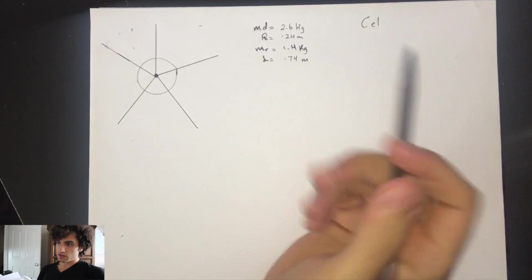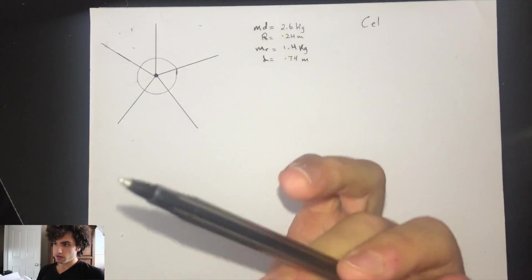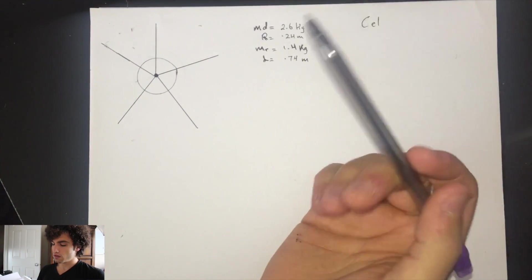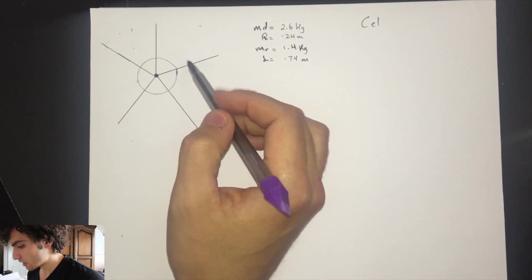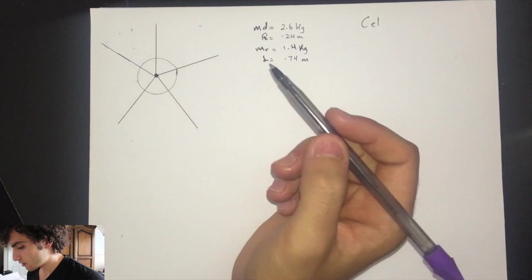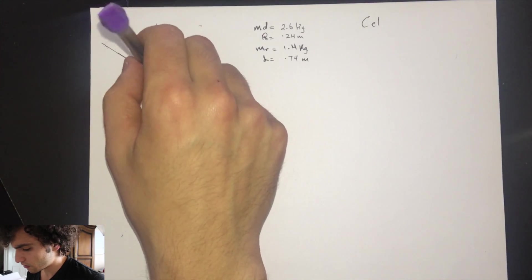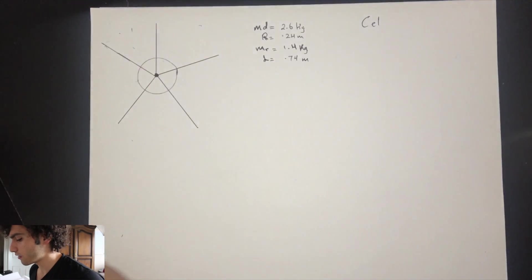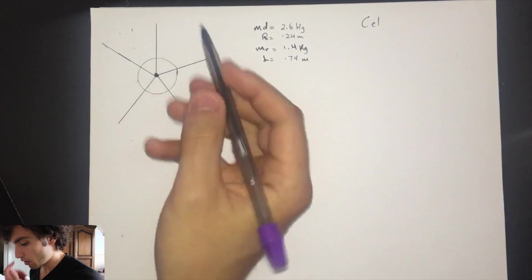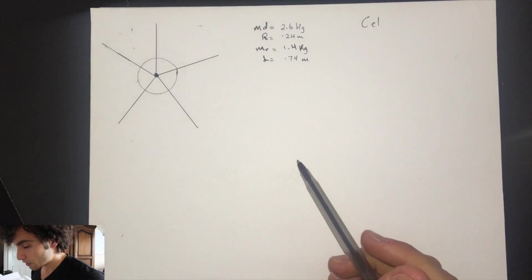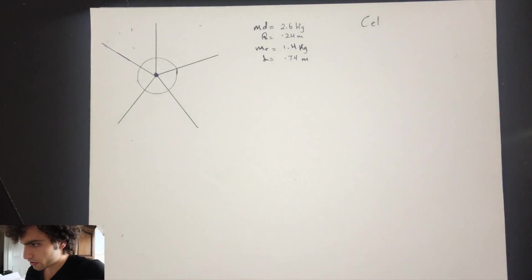Alright guys, this problem is from what they call 'Flip It Physics.' We're going to be doing the ceiling fan problem. We have five rods and there's a disc in here, with a string hanging out from the center of motion, and it's rotating. The first question asks for the moment of inertia of each rod about the axis of rotation.